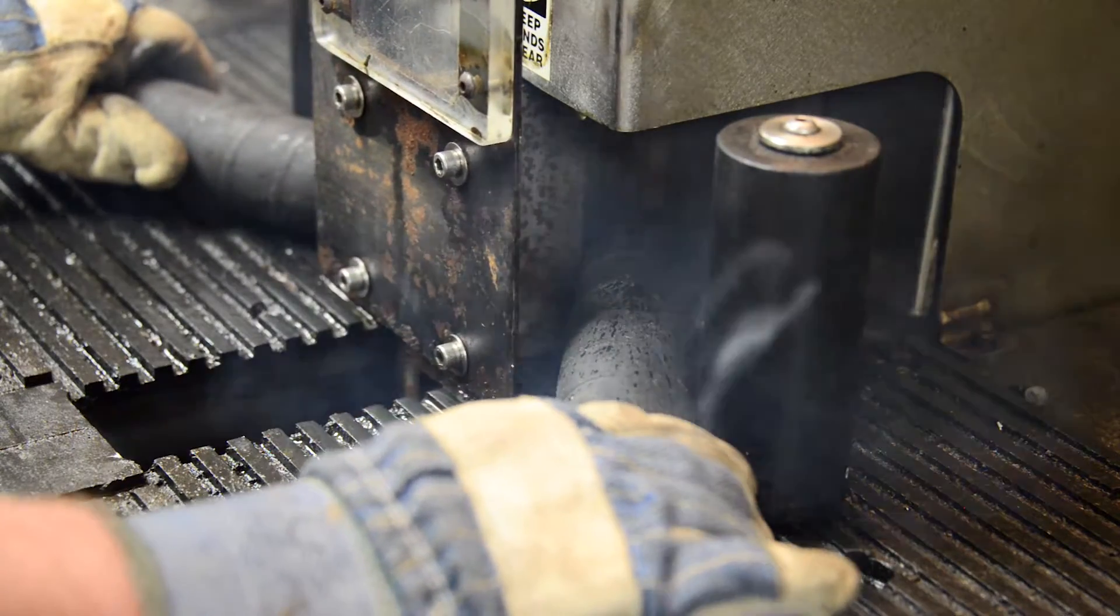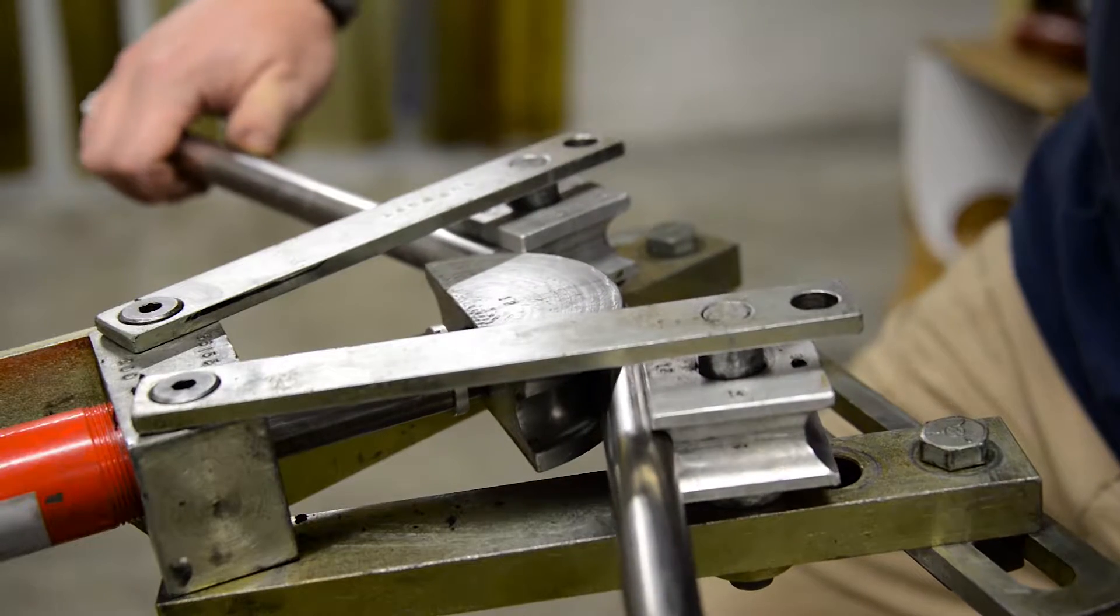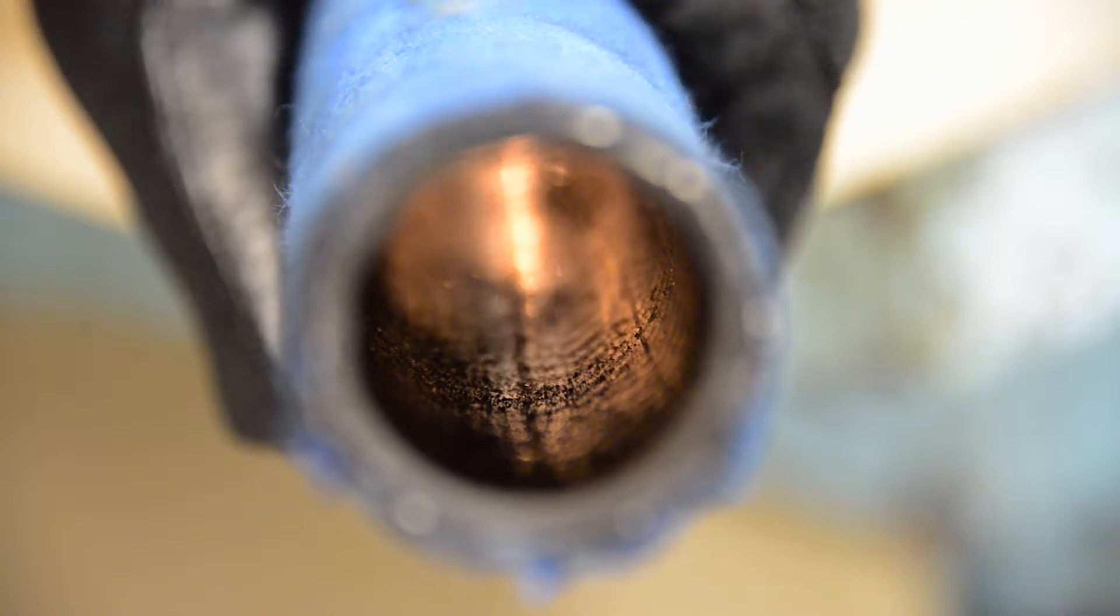Hose and tube manufacturers make tens of thousands of assemblies on a daily basis. Mandrel lubricants and tooling contaminants become embedded inside the fabricated assemblies.